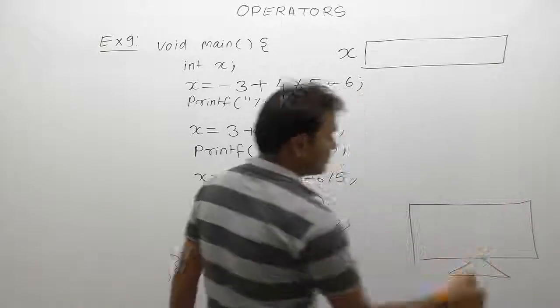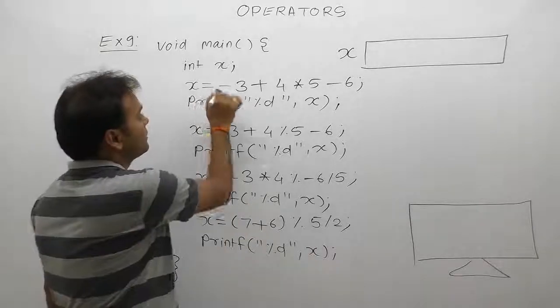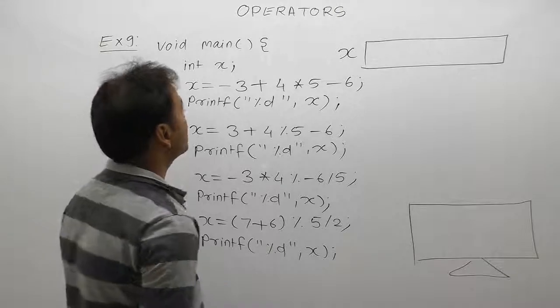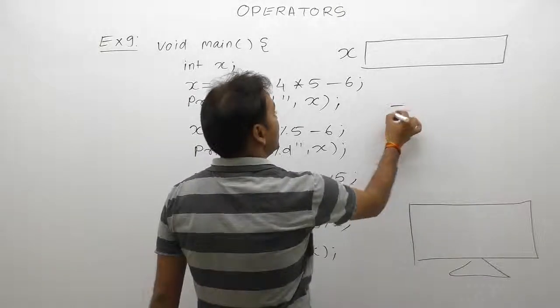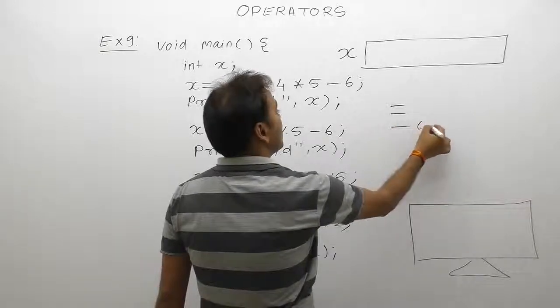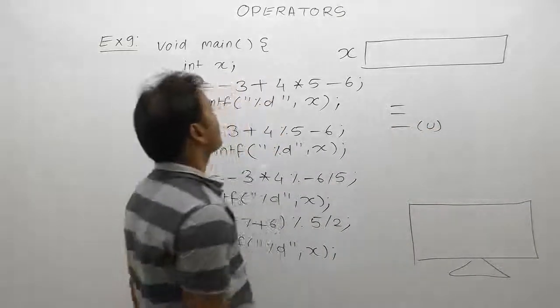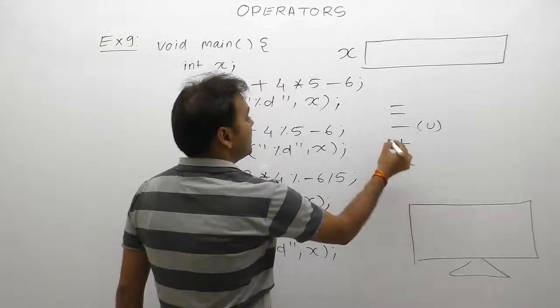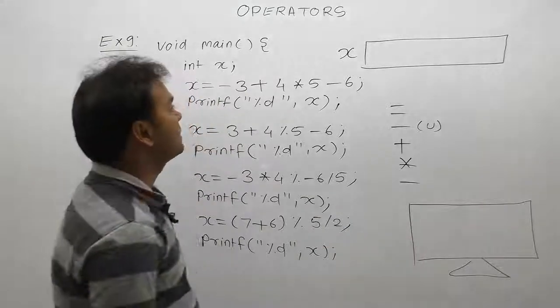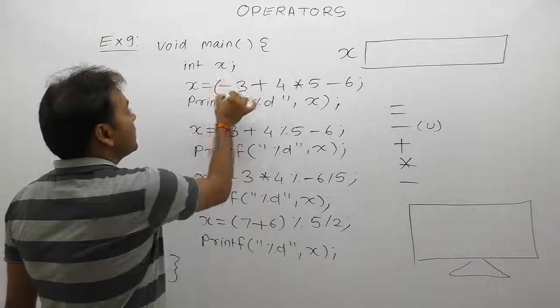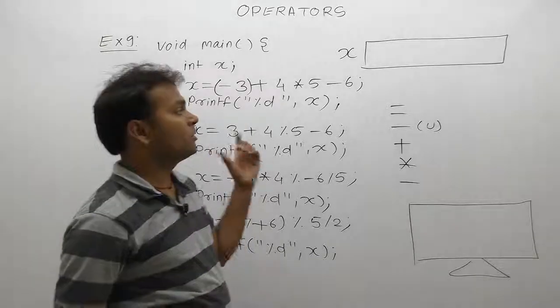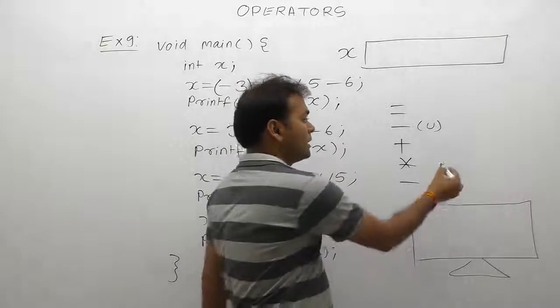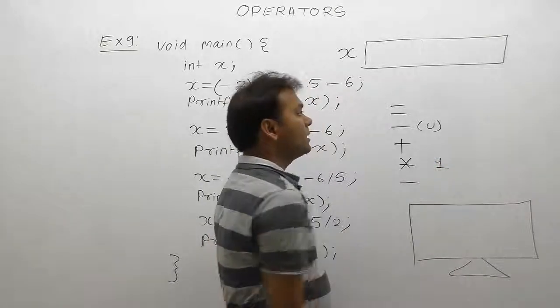In the first case, the total is an expression with a number of operators. There are assignment operator, then unary minus, then binary plus, and remaining are binary operators: plus, multiply, and minus. Unary has the highest priority, so apply that. Parentheses are only for understanding point of view. Remaining cases, highest priority goes to multiply, which will get high priority over the remaining operators.